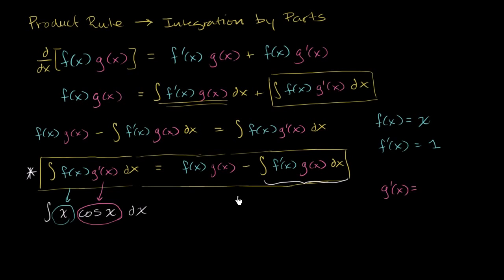We are assigning g'(x) to be equal to cosine of x, which means g(x) is equal to sine of x, the antiderivative of cosine of x.